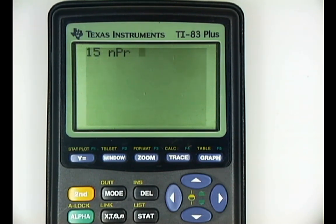Hit enter. It's prompting you for your r. How many do you want to select? How many do you want to permutate? Well, let's do 3, just like on our example on page 42. Hit enter. And the answer is there are 2,730 different ways to select 3 people out of 15 when the order actually matters.